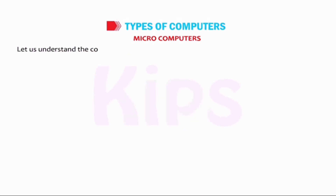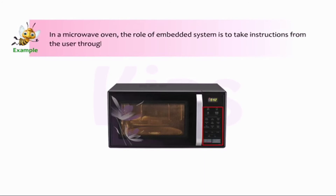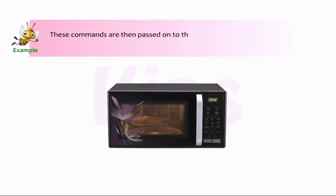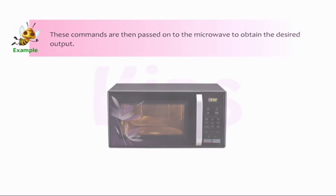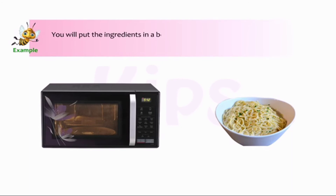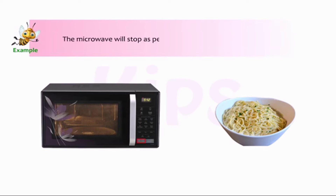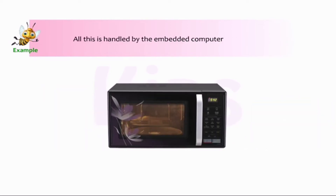Students, let us understand the concept of embedded computers with the help of the given example. In a microwave oven, the role of the embedded system is to take instructions from the user through the keypad and translate them into commands. These commands are then passed on to the microwave to obtain the desired output. Suppose you want to cook noodles in a microwave — you put the ingredients in a bowl, place the bowl on the glass tray, set the timings and press the start button. The microwave will stop as per the timings set, and all this is handled by the embedded computer of the microwave.